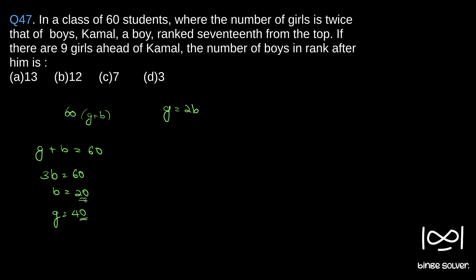Now, Kamal, a boy, is ranked 17th from the top, so there are 16 people ahead of him. There are 9 girls ahead of Kamal, so out of the 16 people, 9 are girls. How many boys will there be?